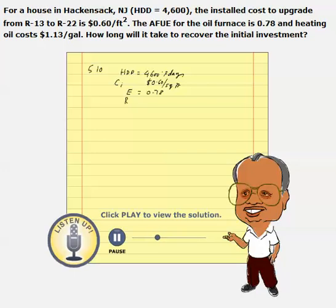We know the initial R value, R1, is 13. And we know the final R value, or improved R value, which is 22. The difference is 9.